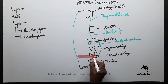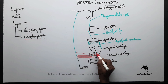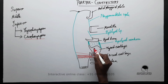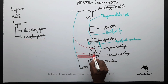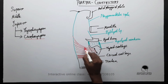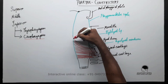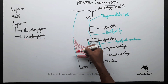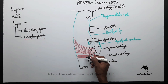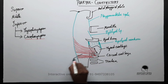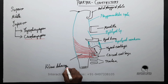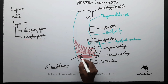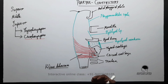The thyropharyngeus arises from the tendinous arch, the inferior and superior tubercle, as well as the oblique line; the fibers fan upwards and are inserted into the pharyngeal raphe. In between the cricopharyngeus and thyropharyngeus there is a potential gap named Killian's dehiscence, which is clinically very important because that part is considered to be a weak region.